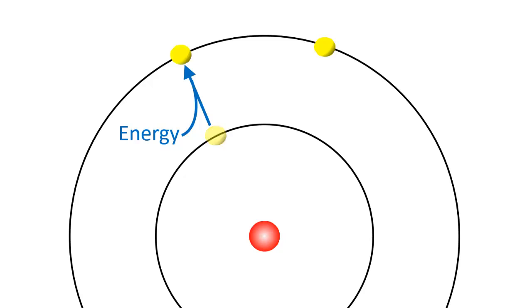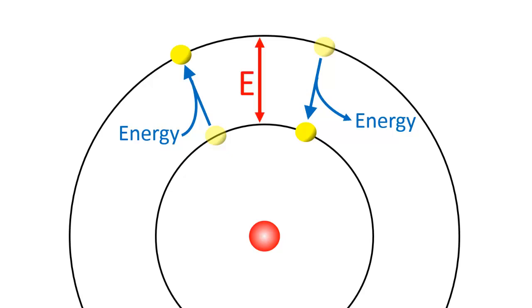while electrons emit energy by jumping from an orbit of higher energy to an orbit of lower energy. The amount of energy absorbed or emitted is simply the difference in energy between the two orbits.